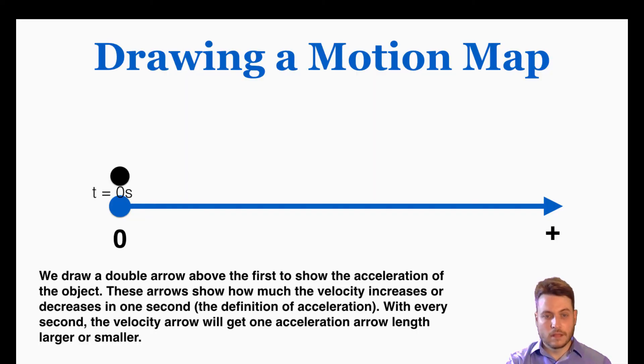So I'll show you an example. Let's say that at time equals zero, there's no velocity, but there is an acceleration arrow. So this acceleration arrow is showing you how much faster you'll be going after one second. So it's going to show you the increase in the velocity arrow in one second. So after one second,